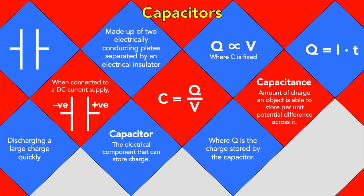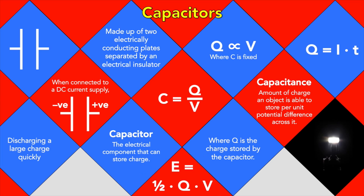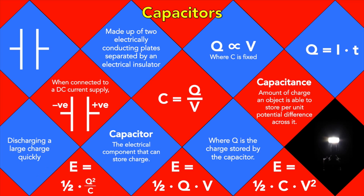Capacitors are used for discharging a large charge quickly — an example is camera flashes. The energy is stored because the two oppositely charged plates attract each other. You can work out the energy stored with E equals half QV, which is equal to half CV squared, or Q squared over 2C.